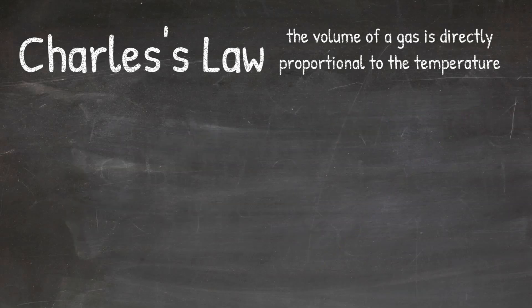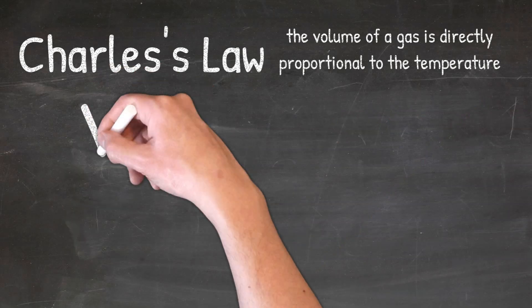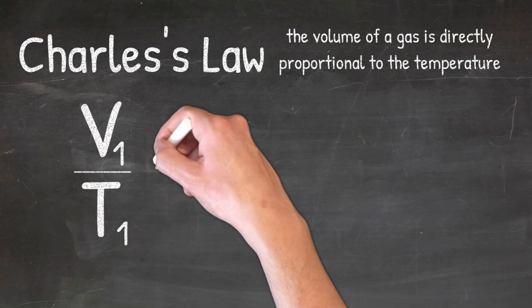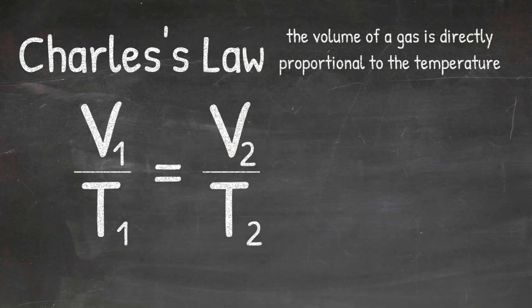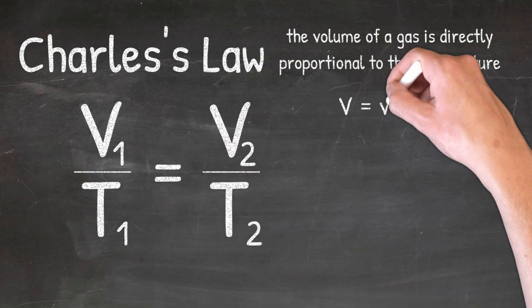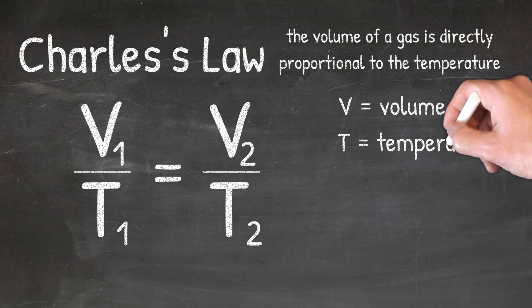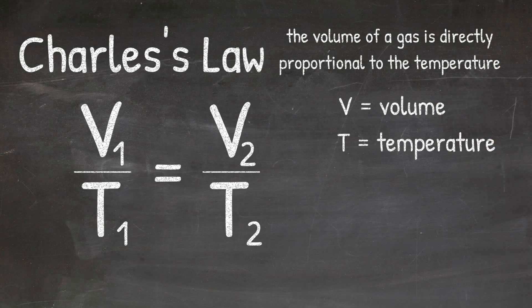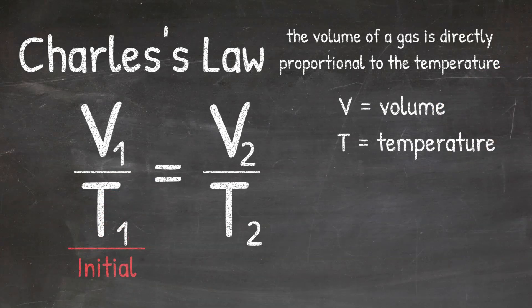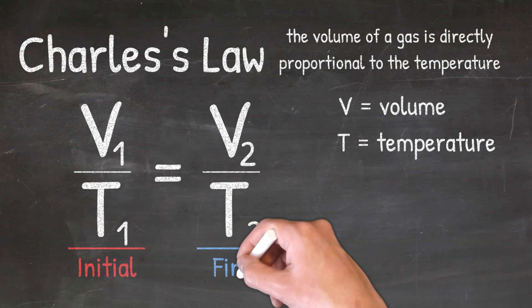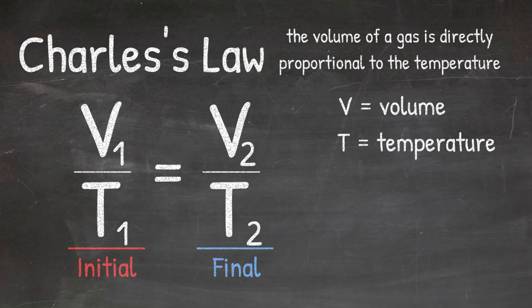When it comes to solving gas law problems using Charles' law, we can use the formula V1 over T1 equals V2 over T2, where V stands for volume and T stands for temperature. The 1 represents the initial temperature and volume, which is the temperature and volume you are starting with, while the 2 represents the final temperature and volume, which is the temperature and volume you are ending with.